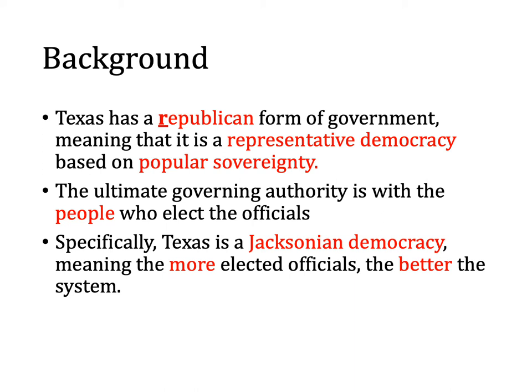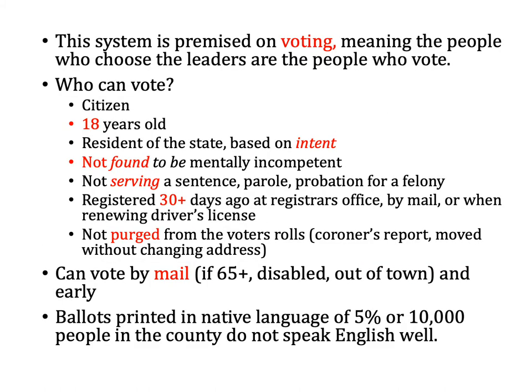In Texas, we have got this beat. If you've ever voted and looked at your ballot, it is a long ballot, especially compared to other states — so we are really winning at this Jacksonian democracy thing. The system of democracy is premised on voting, meaning if you don't vote, you're not really a decision maker and you're not the one choosing the leaders. So if you are eligible to vote and you don't vote, you don't really have a say in who is elected.